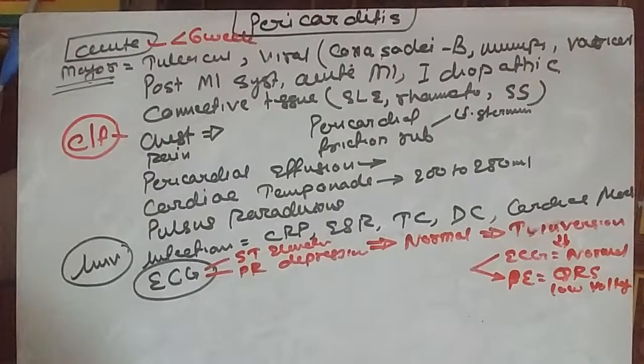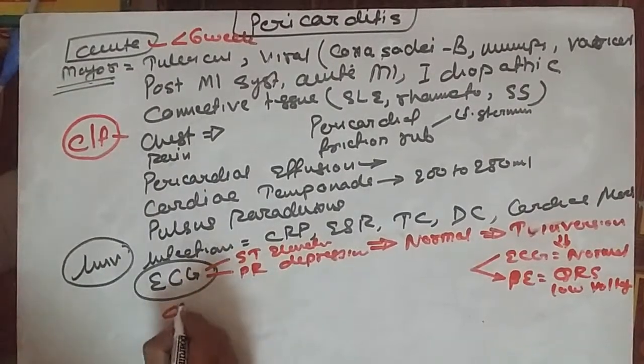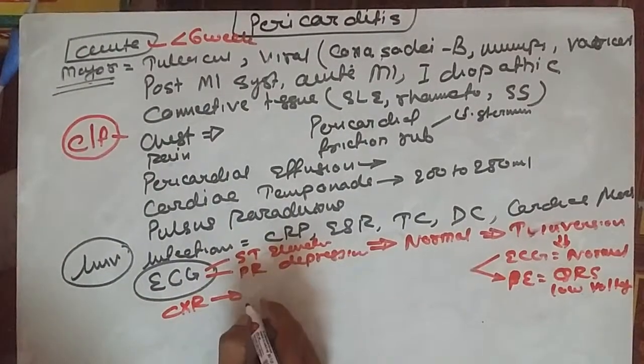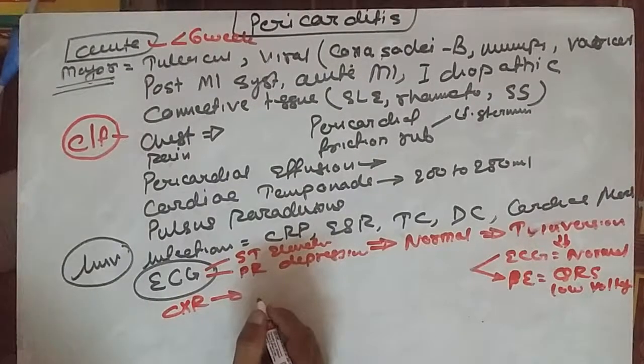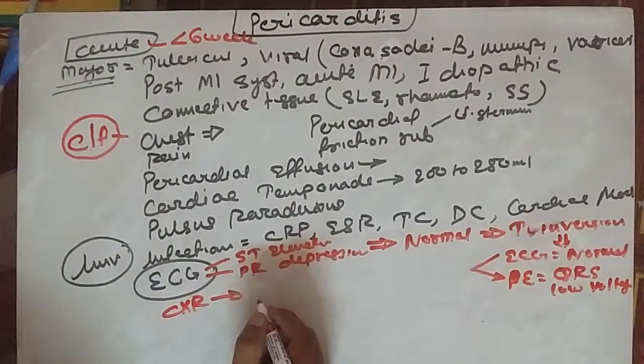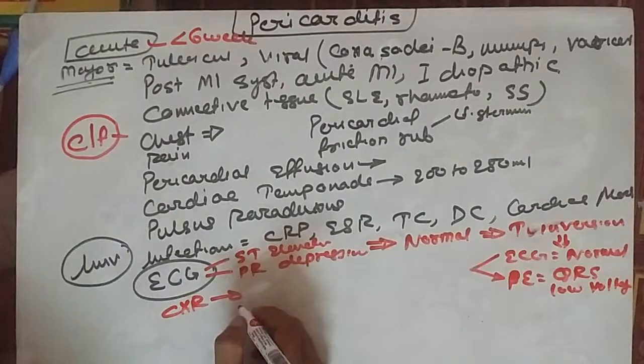Under chest radiography, there will be findings with or without effusion. If there is effusion present, there will be a water bottle appearance of the heart in the chest X-ray in case of pericardial effusion.